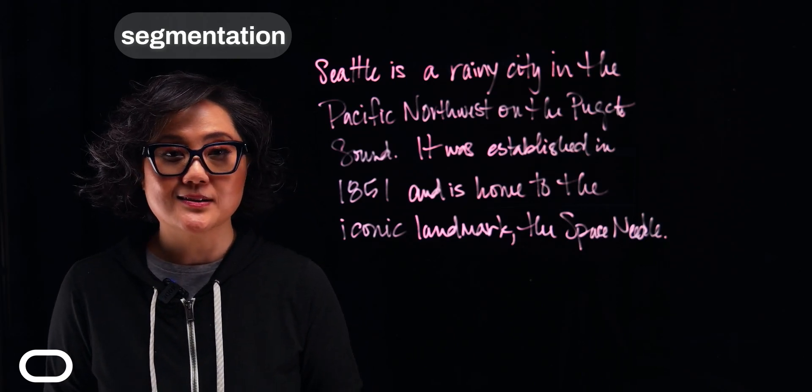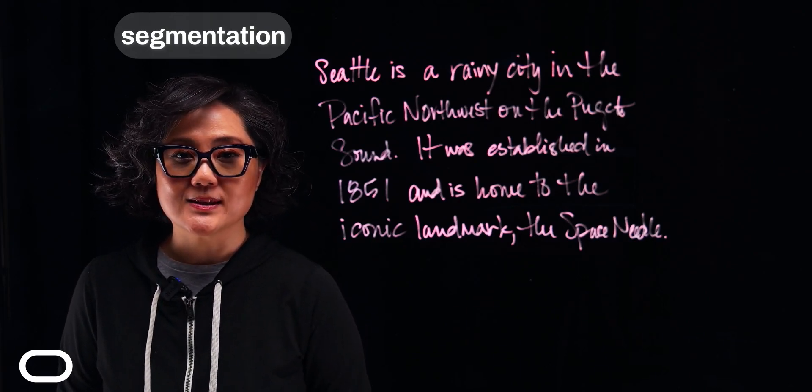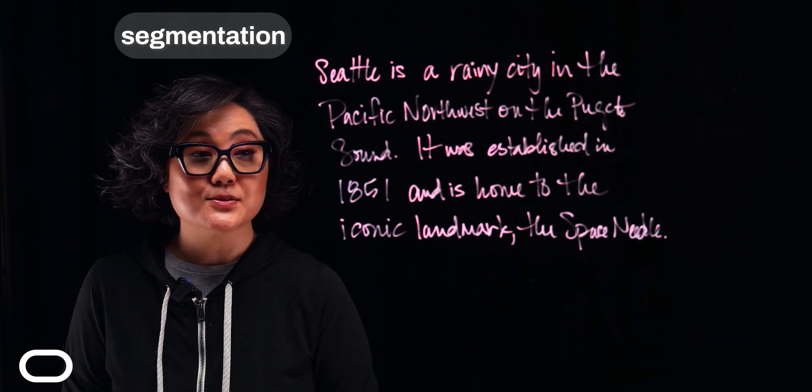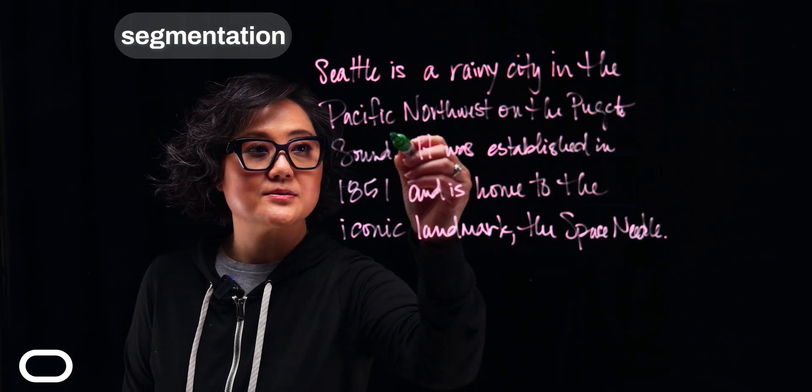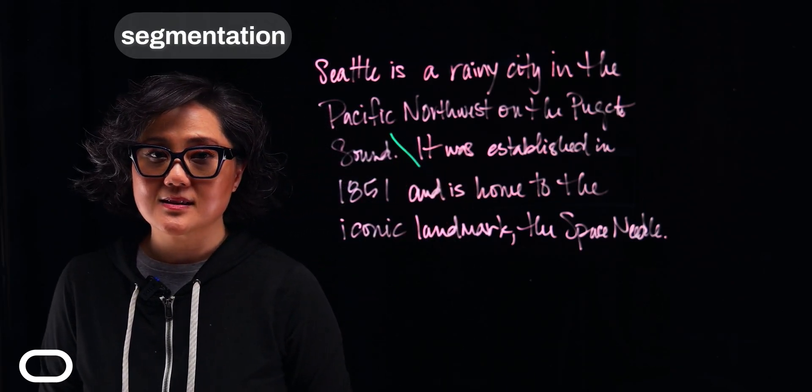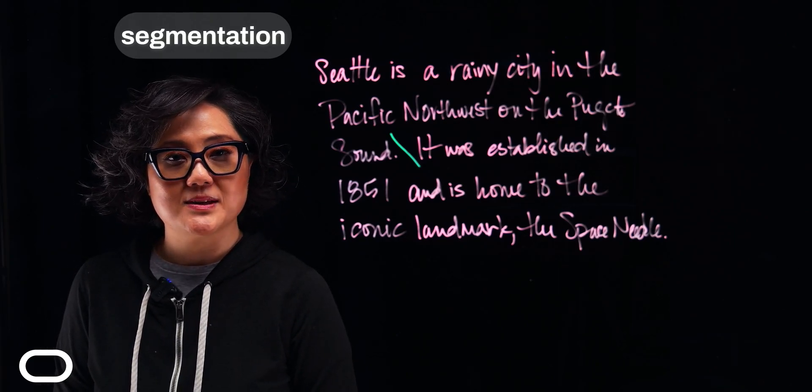I'm particularly fond of Seattle because it's also my hometown. We might break this example into the following sentences. Seattle is a rainy city in the Pacific Northwest on the Puget Sound. It was established in 1851 and is home to the iconic landmark, the Space Needle.